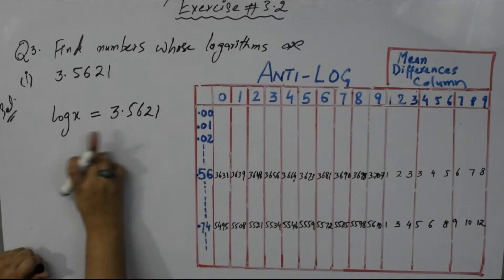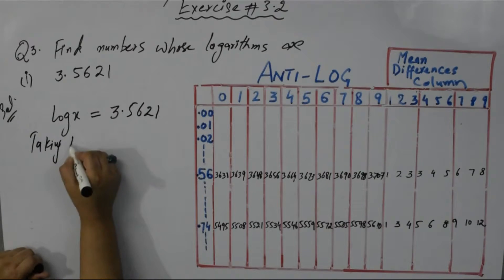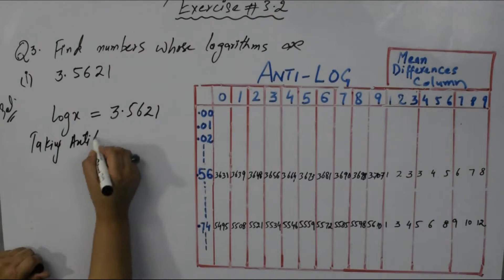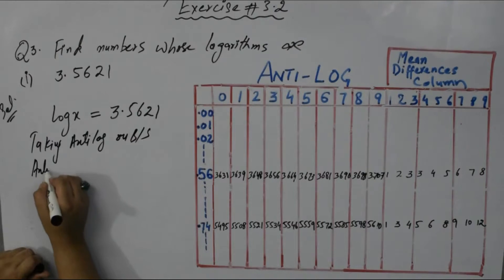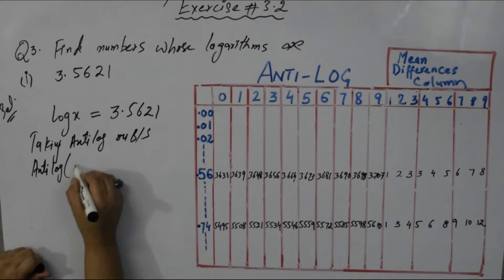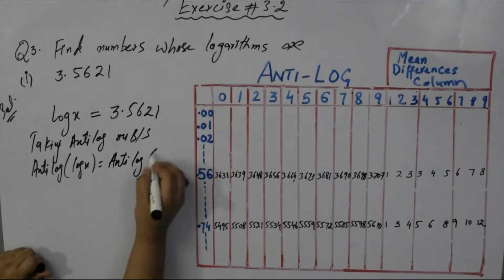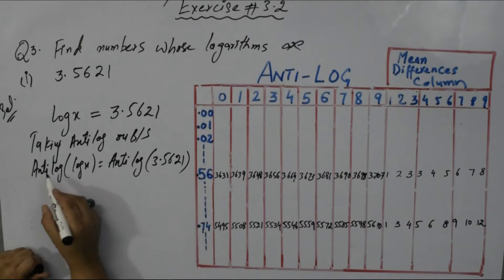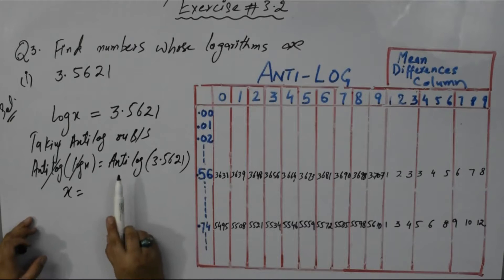Taking anti-log on both sides: anti-log of log x equals anti-log of 3.5621. Anti-log and log are inverse of each other so they cancel with each other.